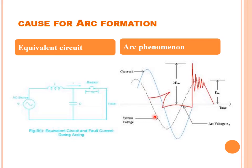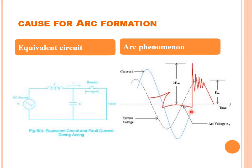Looking at the waveforms: the system voltage and arc voltage with current — the LC circuit forms sinusoidal voltages and sinusoidal current. At the instant current reaches zero, the voltage is fluctuating and there is a doubling effect: a spike rises to twice the peak value Em. This very high voltage must be extinguished, which can be done using methods shown in the next slide.